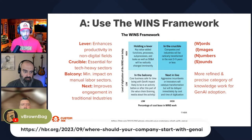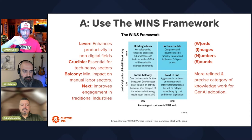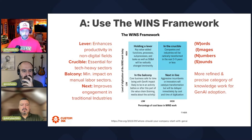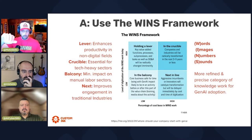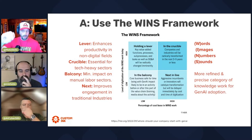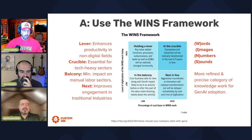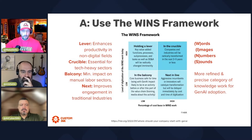The WINS framework maps how much words, images, numbers, or sounds are used across different types of work — programming, finance, marketing copy and content, etc. They draw a correlation: if you're in a holding lever position you can enhance productivity in non-digital fields; if you're in the crucible, hitting both high points, you should definitely be doing stuff with AI. They provide examples of which industries fit in these boxes — landscaping, for instance, is in the balcony where AI isn't really going to change those industries.